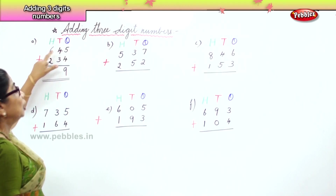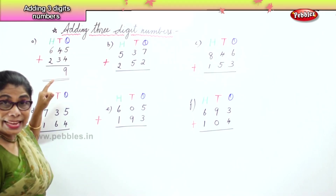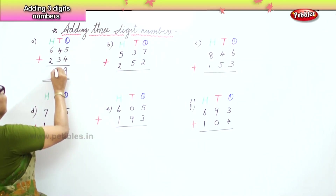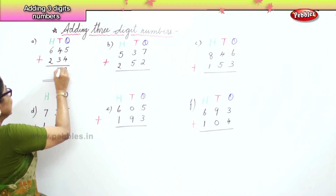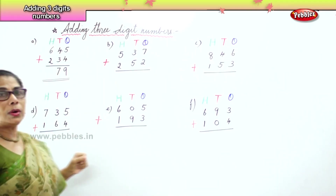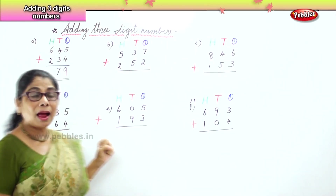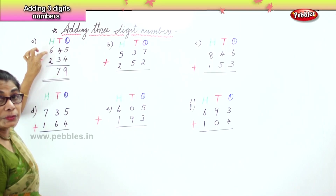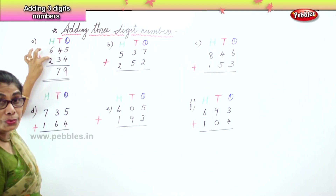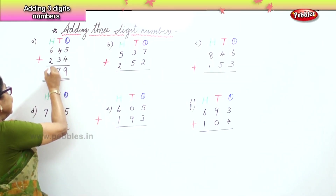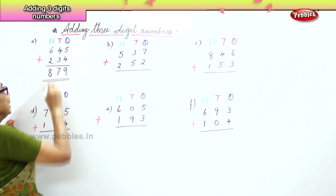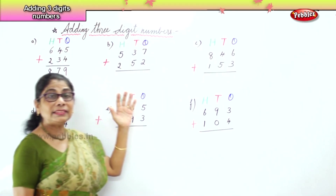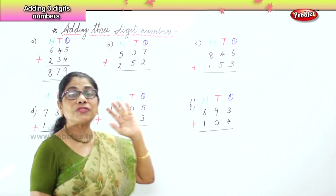Now we go to the tens place. You have four tens and three tens. What is four plus three? Seven tens. What is six hundreds and two hundreds? Six plus two? Eight. That's all — adding three-digit numbers when it is straightforward is very easy.